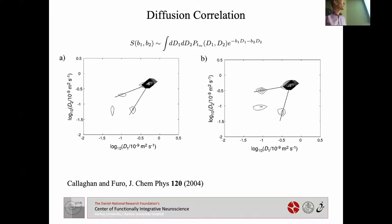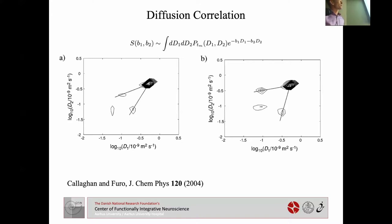The idea is that your molecules can be in different environments with different diffusion coefficients. Your signal is a Gaussian signal from each environment — exp(-B1·D1) and exp(-B2·D2). You count how many spins experienced diffusion coefficient D1 in the first period and D2 in the second. You can think of this as a Laplace transform, sample with different B values, invert it, and by varying the mixing time, say something about how long molecules reside in different local environments.